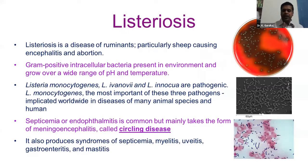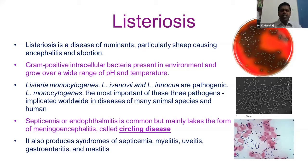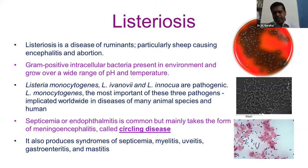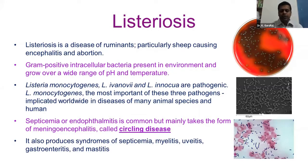If the animal is gestating, that naturally leads to abortion along with nervous symptoms. Listeria is a gram-positive intracellular bacteria present in the environment. It can multiply in silages, multiply at low temperatures, and can be preserved, acting as a source of infection for other animals.